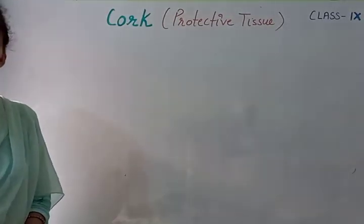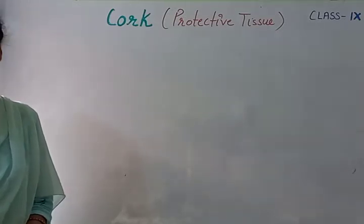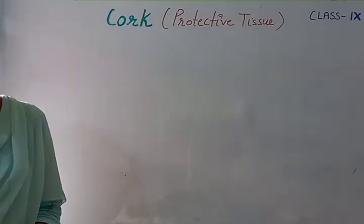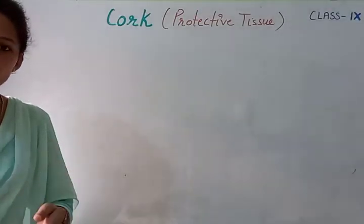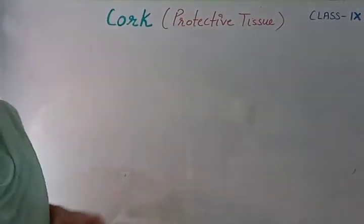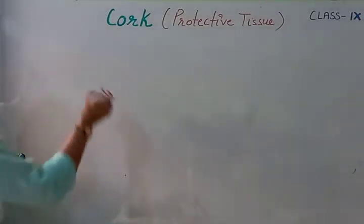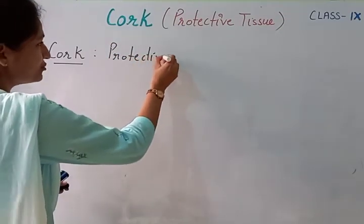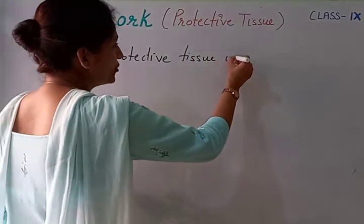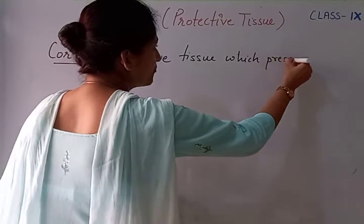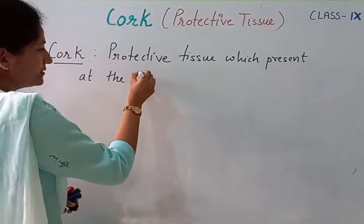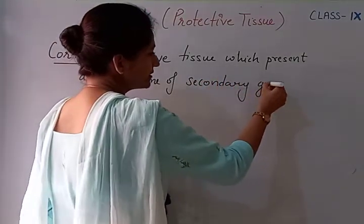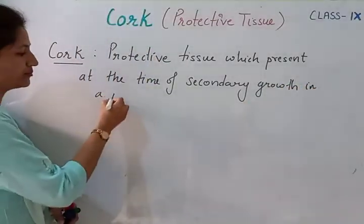That lateral meristem tissue will keep on dividing and form layers of cells. Those layers of cells become dead and form another kind of protective layer in the case of the woody plant, or we can say at the time of the secondary growth — that is called cork. So what is cork? Cork is a protective tissue which is present at the time of secondary growth in a plant.